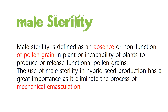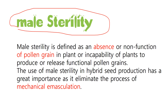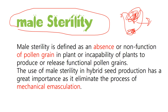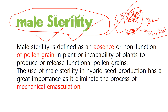Before going into the definition of male sterility, here's a basic outline. Imagine this is a flower — this is the male part and this is the female part. When you remove the male part, the flower becomes unisexual. With only one sex, it cannot self-pollinate. Without self-pollination, the plant is directed toward cross-pollination. So male sterility is a technique used to inhibit self-pollination and promote cross-pollination.